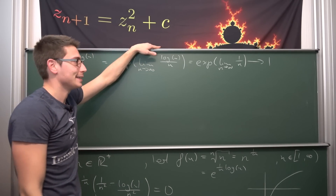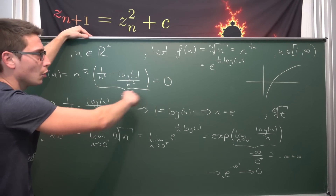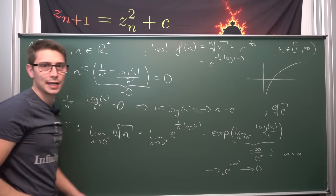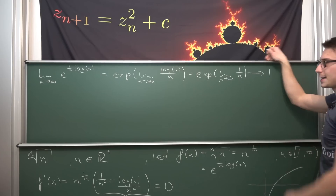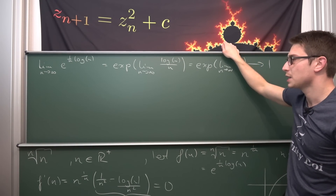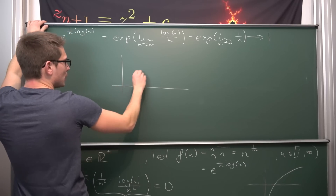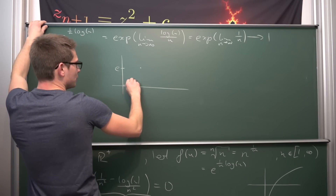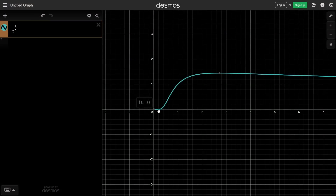So on our interval from 1 to infinity, n to the 1 over n never goes to 0; it approaches 1. If we draw this now: the function starts at 0 in the limit as n→0+, rises to a maximum at the e-th root of e (between 2 and 3 on the n-axis), then decreases back toward 1 as n→∞. We can verify this in Desmos by looking at the graph of x to the 1 over x.